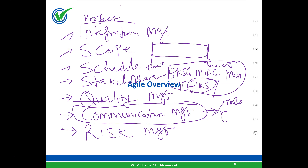After communication management, the next thing as a project manager is risk management. So we have scope, schedule, stakeholders, quality, communication, and risk. There's also one more critical area — we need to manage finances. We need to manage budget, which we also call cost management.